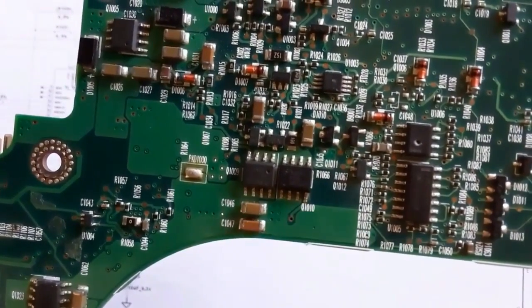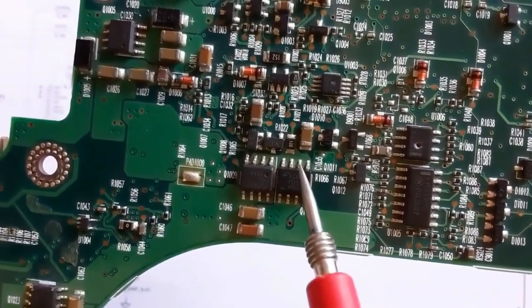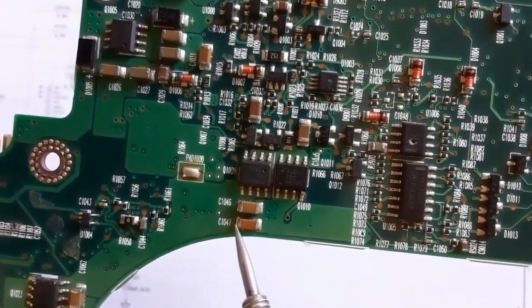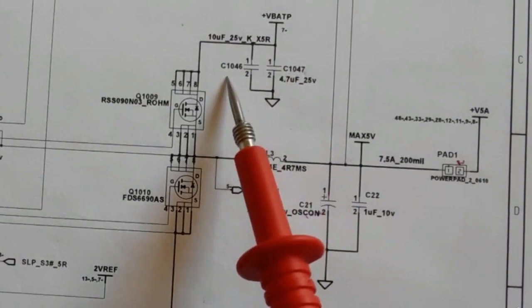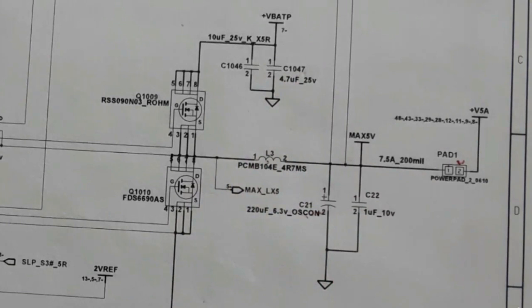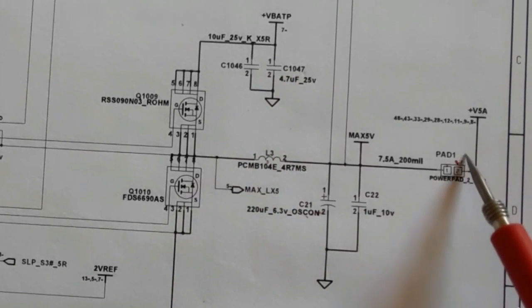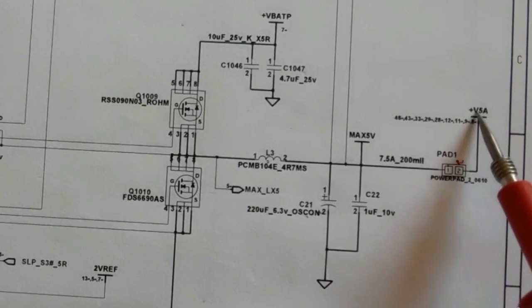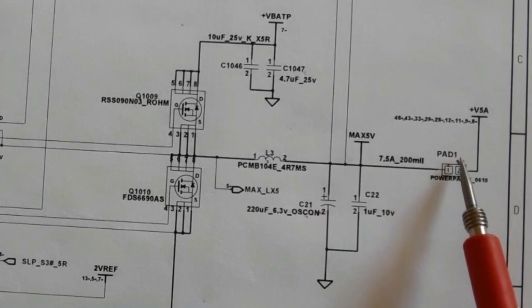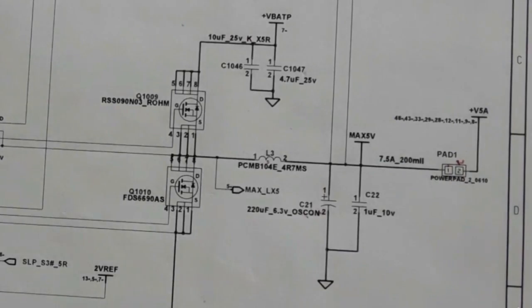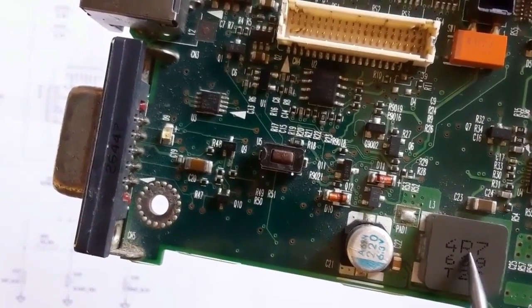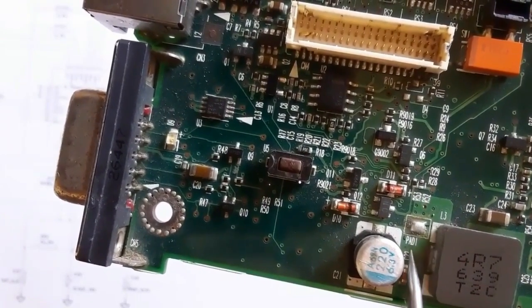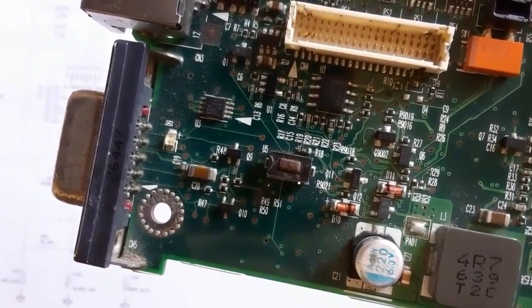On the back side we have the first MOSFET Q1009, and the signal MOSFET is Q1010. We also have filtering capacitors C1046 and C1047. If you have any problem with the 5-volt channel, you should check all these components. Here we have the test pad — you should use this test point to check whether you have 5 volts or not.